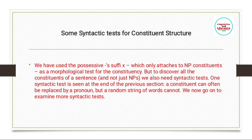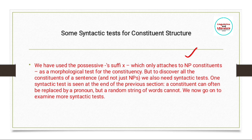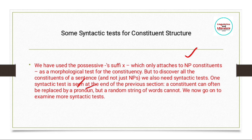We have used the possessive 's, which only attaches to noun phrase constituents, as a morphological test. But to discover all constituents of a sentence — not just noun phrases — we also need syntactic tests. One syntactic test is that a constituent can often be replaced by a pronoun, but a random string of words cannot. For example, in paragraph writing, when referring to a single person repeatedly, we replace the name with a pronoun.